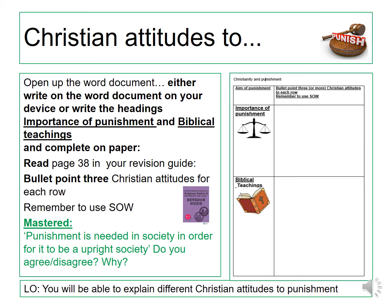Your master task is: punishment is needed in society in order for it to be an upright society. Do you agree or disagree with the statement, and I want you to explain why.